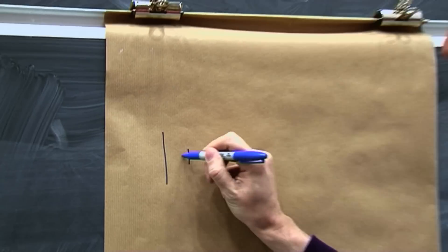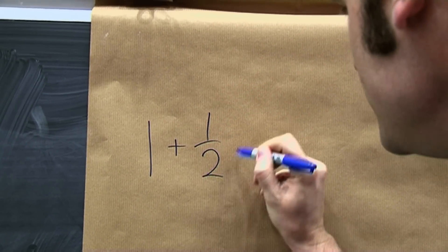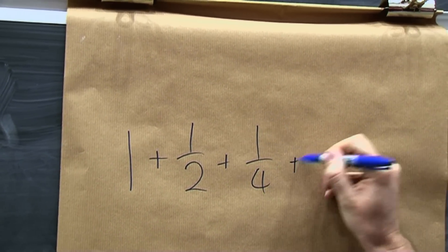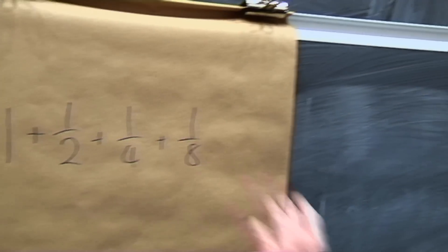Okay, so if you start with one, and then you add a half, and then you add a quarter, and then you add an eighth, each time you're getting smaller and smaller.